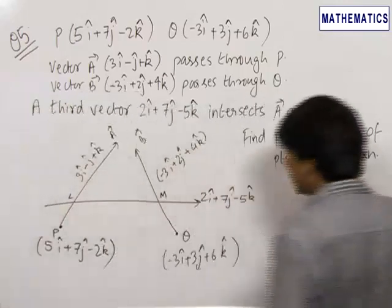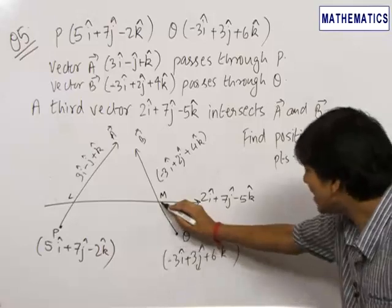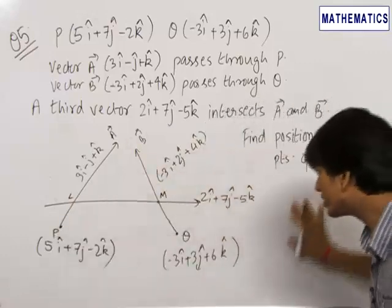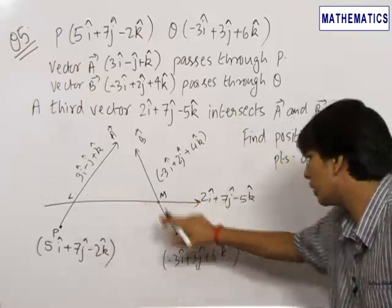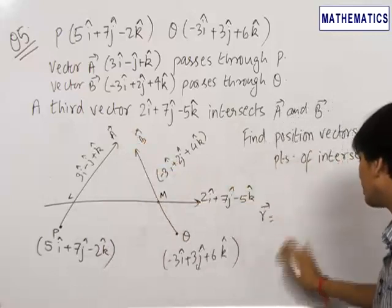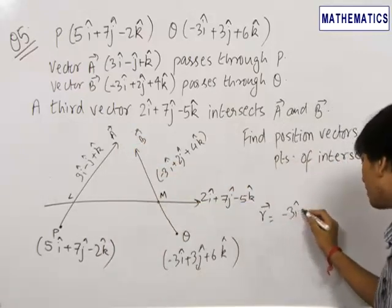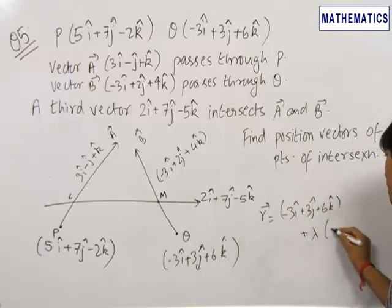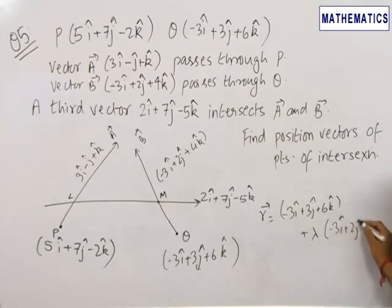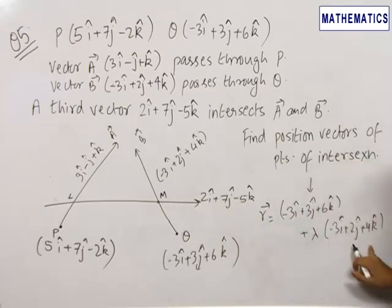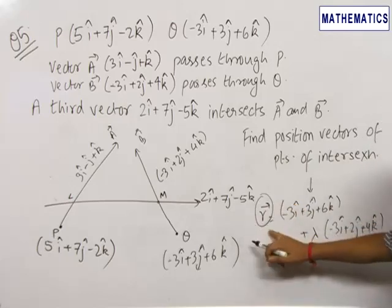Let the intersections be at points L and M. We need to find the position vectors of points L and M. We clearly see that point M lies on the line passing through Q and point L lies on the line passing through P. It is advisable in such cases to write the equations of the two lines. The equation of the line passing through Q can be written as −3i + 3j + 6k + λ(−3i + 2j + 4k), where we write the position vector of a known point Q and the direction of the line.